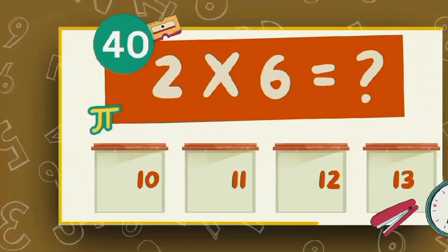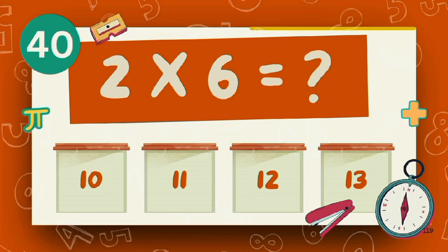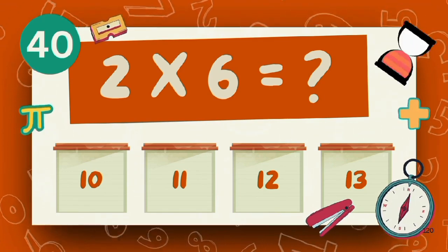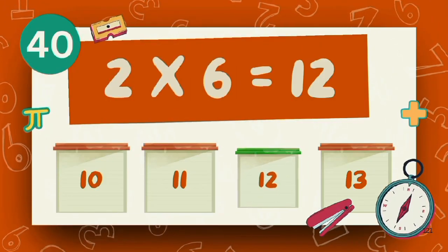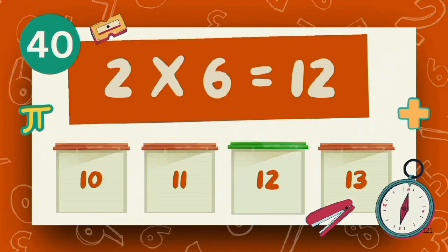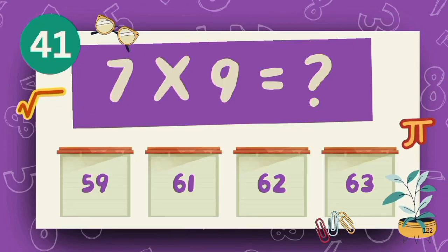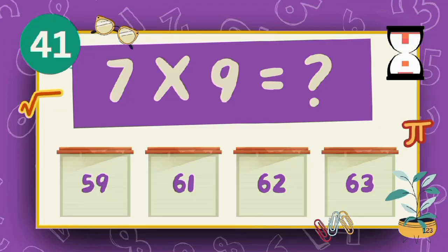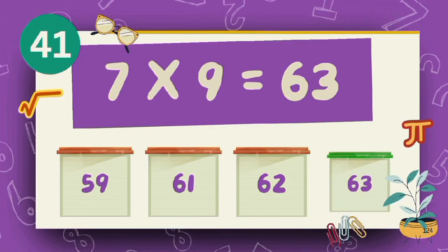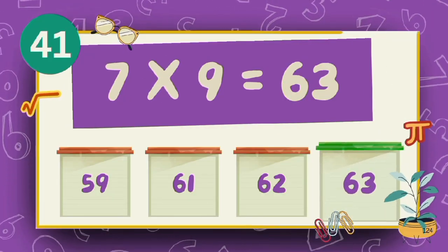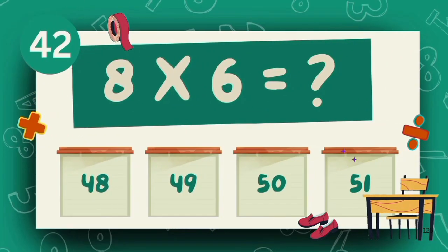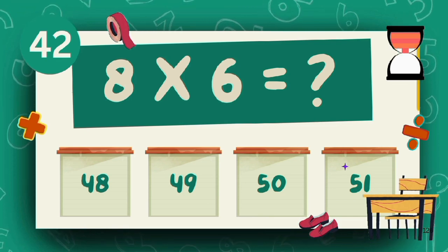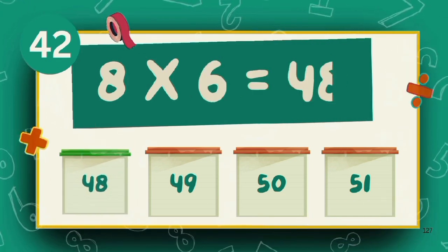What is 2 multiply 6? The answer is 12. What is 7 multiply 9? The answer is 63. What is 8 multiply 6? The answer is 48.